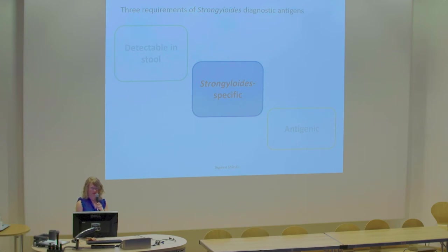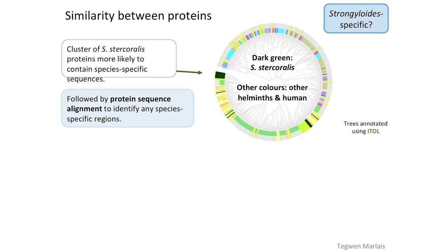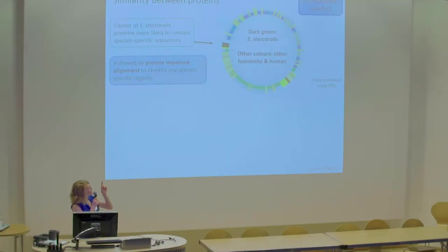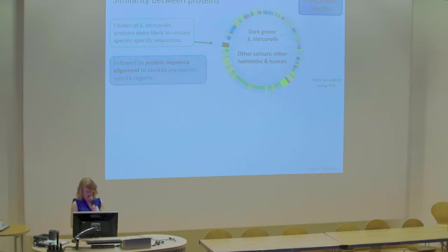The next criteria was species specificity, or at least genus specificity. This was based on those protein families I showed — I took the stercoralis protein families, shown in dark green, and searched those against lots of other nematodes. The ones that cluster together, which are arrowed, indicate that those are more likely to contain species-specific regions in their sequence. Following this, I did actual protein alignments to see exactly which parts of those proteins are species specific.